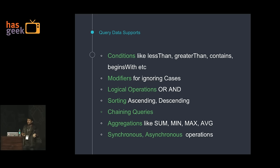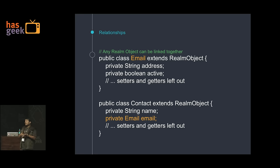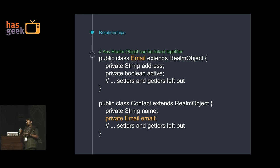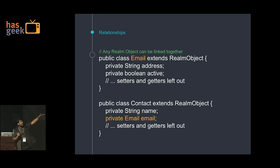Realm supports both async and sync operations. It also has a very interesting concept for relationships. Though there is no foreign key concept, Realm supports relationships — you can have a Realm object inside a Realm object, or the same object inside each other. For example, like Facebook, you have a Person object and you want a friends list, but friends are also Person objects. You can have a list of persons as friends inside a person object.